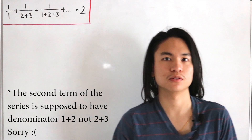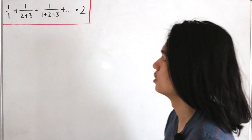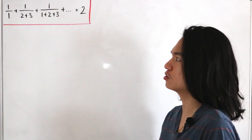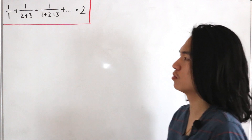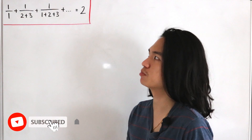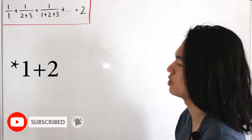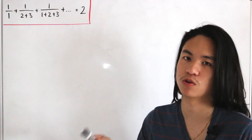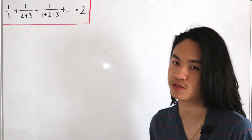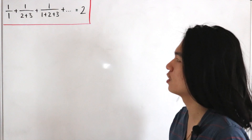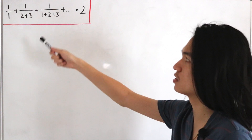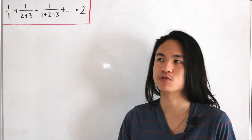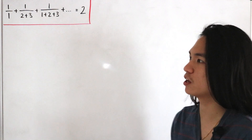Welcome back to another video. Today we want to analyze two proofs of the following summation: one over one, plus one over one plus two plus three, plus one over one plus two plus three plus four, and so on — and the sum actually equals two. This is a very interesting summation.